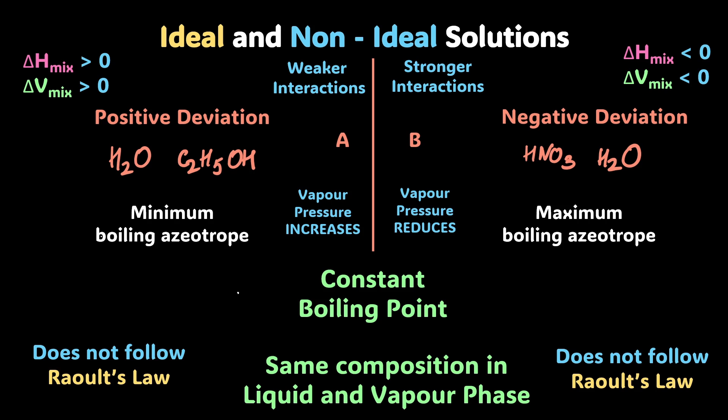Azeotropes boil at a constant temperature and have the exact same composition in the liquid and vapor phase — that's what the curves show when they meet at a certain point. Minimum boiling point azeotropes are extreme cases of positive deviation; maximum boiling point azeotropes are extreme cases of negative deviation. Positive deviation means lower boiling point; negative deviation means higher boiling point. All non-ideal solutions do not follow Raoult's law — that's why you get curves instead of straight lines on those graphs.